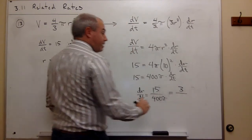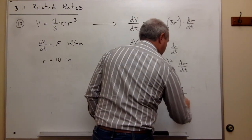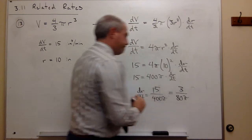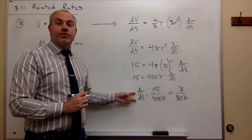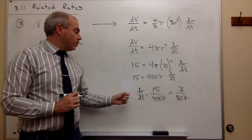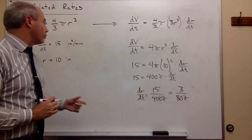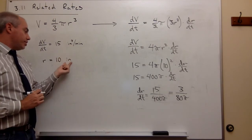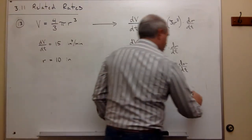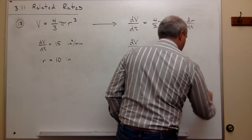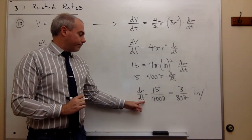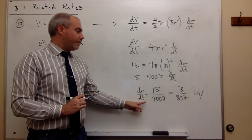Now I should ask, what are the units on dr/dt? In this problem, r the radius is measured in what unit? Inches. So it's inches per—on the bottom we have time, and time in this problem is measured in minutes, so this is minutes.